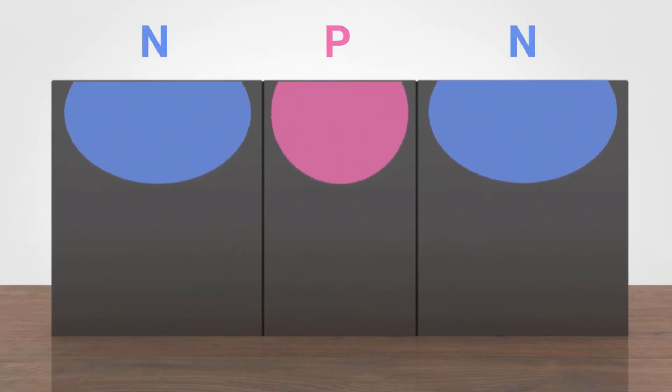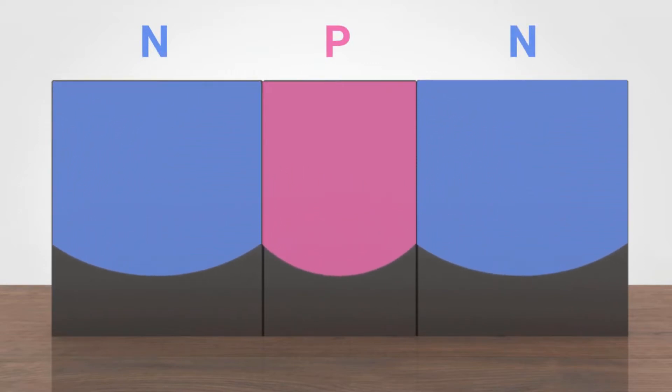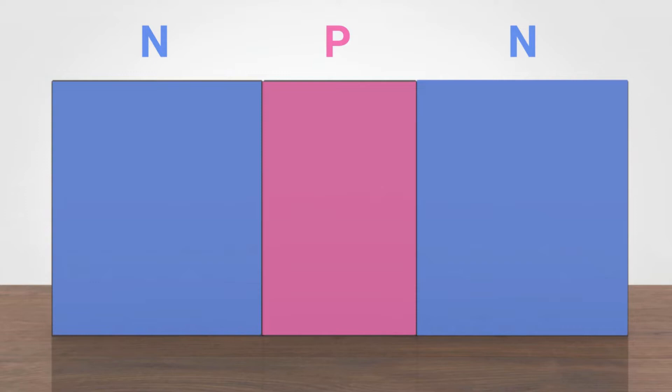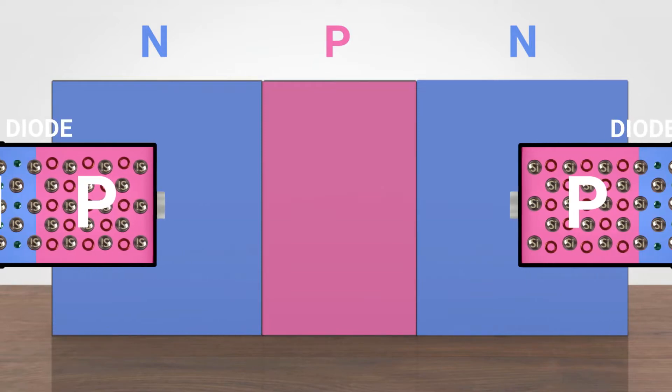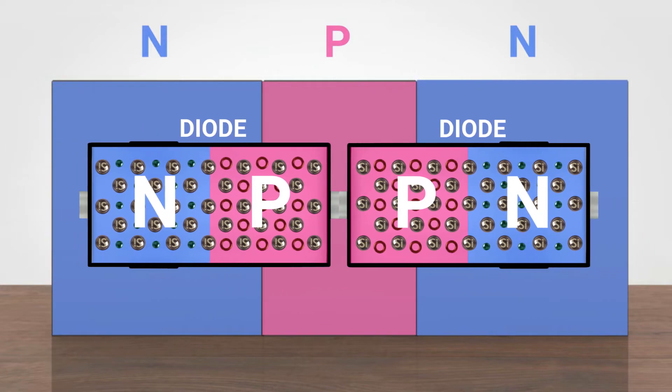We can easily notice the P-layer in the transistor is much thinner and slightly doped and is between two larger N-layers. We can say that this transistor is substantially formed by the union of two diodes, connected one to each other in a back-to-back configuration.